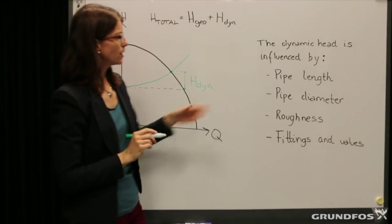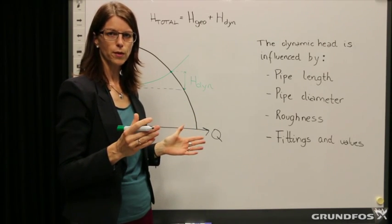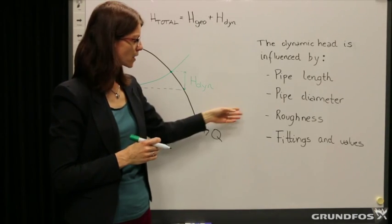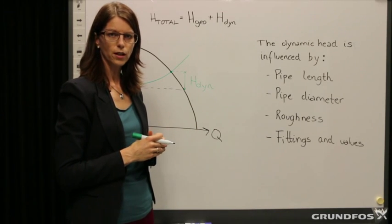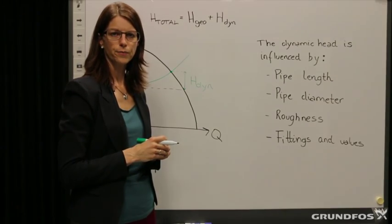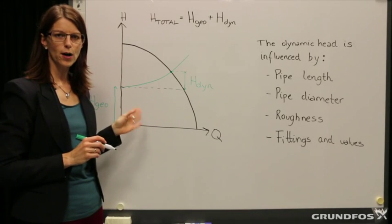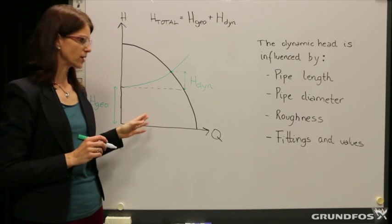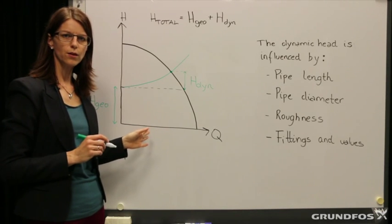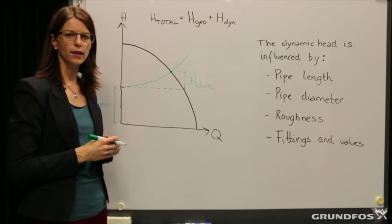The dynamic head is influenced by the length of the pipe between the pump and the sewage mains, the diameter of the pipe selected, the roughness of the surface of the inner pipe, and the fittings and valves mounted on the pipeline. The reason why the dynamic head varies according to the flow is due to the resistance in the pipe depending on the flow velocity. We will look more into that later in this video.